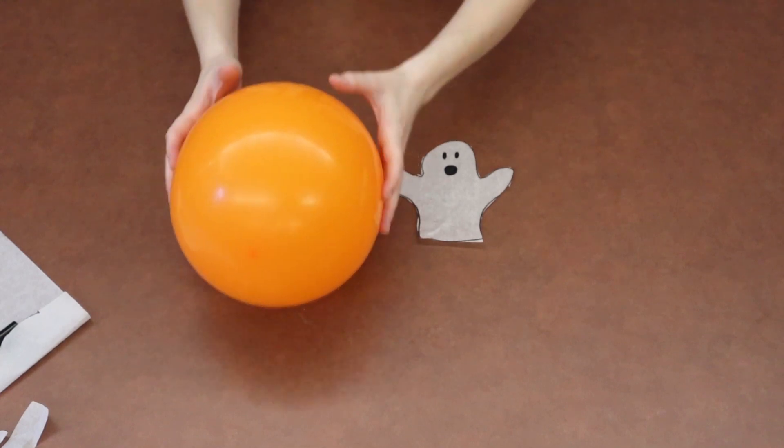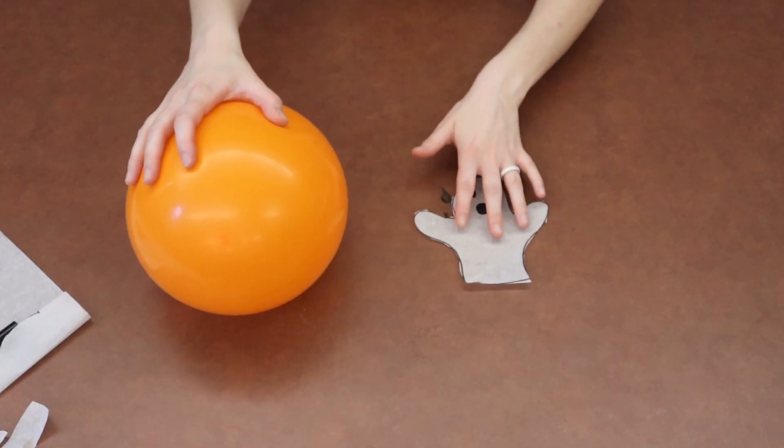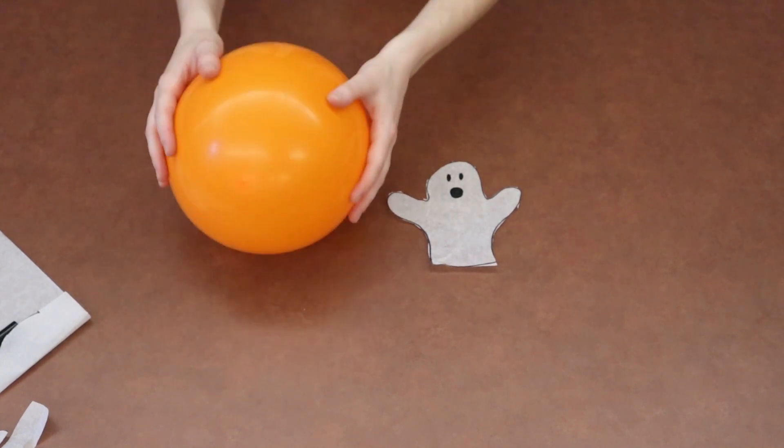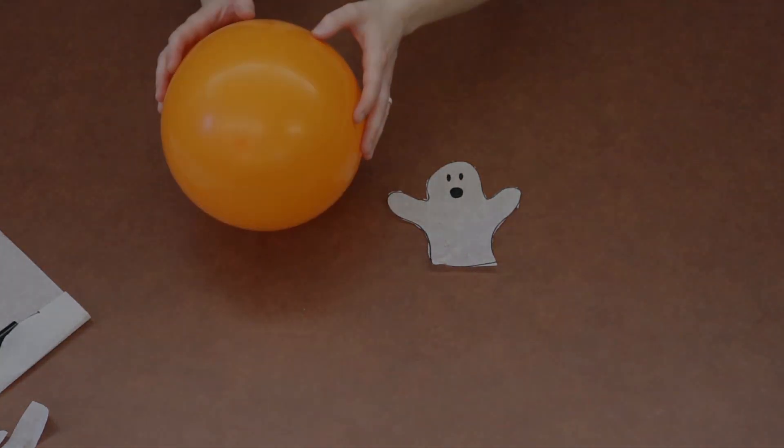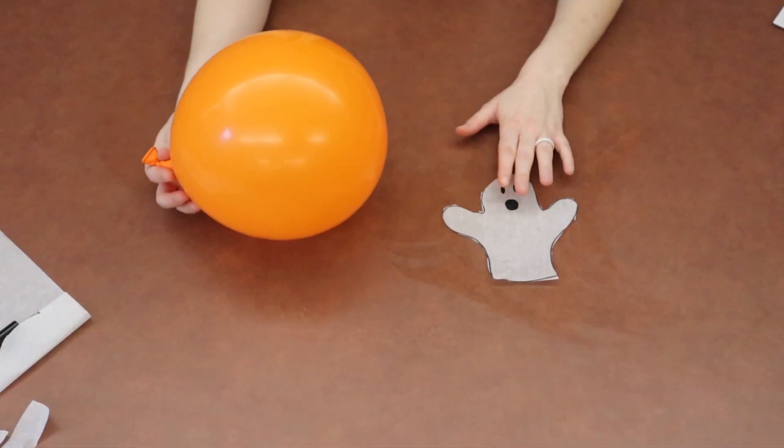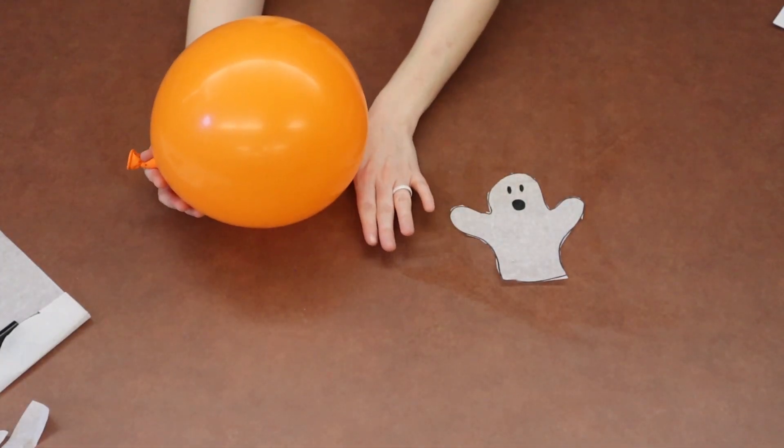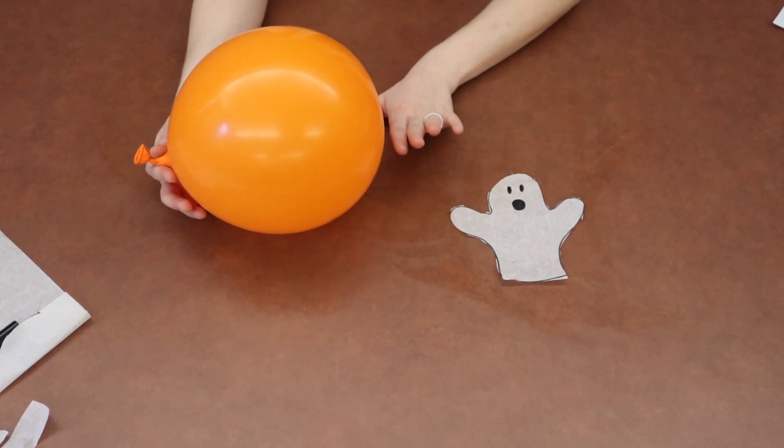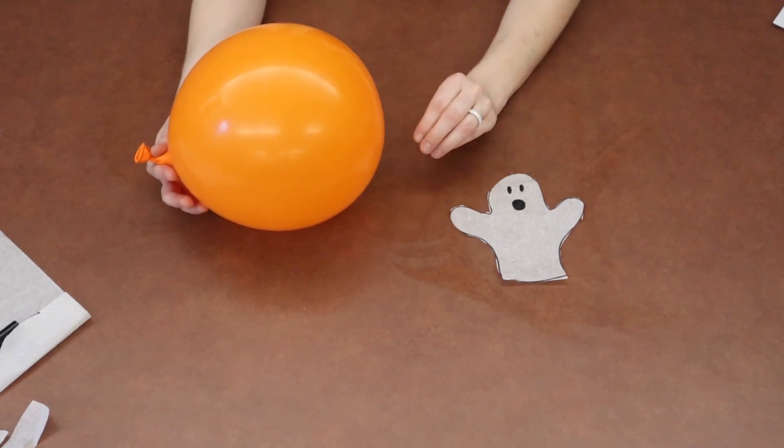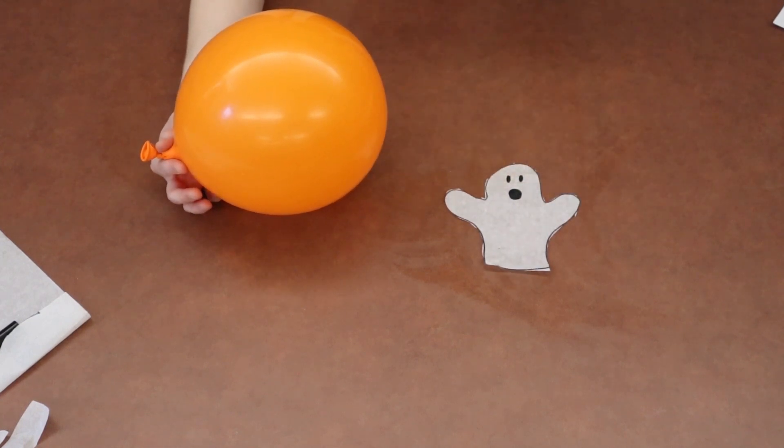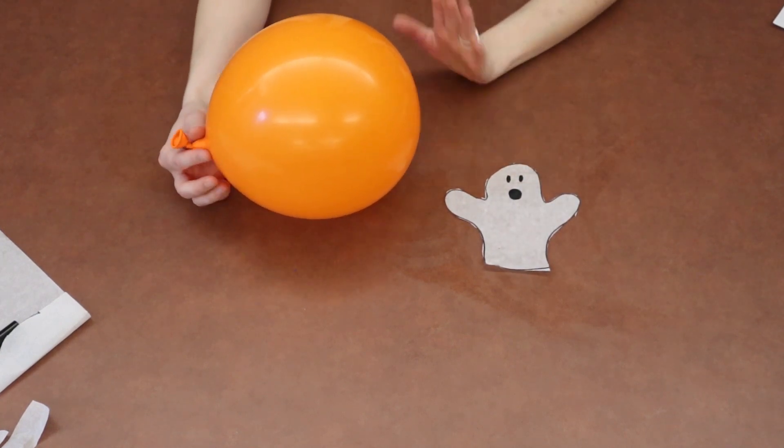Okay, so we have our balloon and we have our ghost. So the main parts of our experiment are ready to be used. So now that we have the two main pieces of our experiment ready to go, what we're going to do is we are going to talk a little bit about static electricity, because that is what is going to make our experiment work.